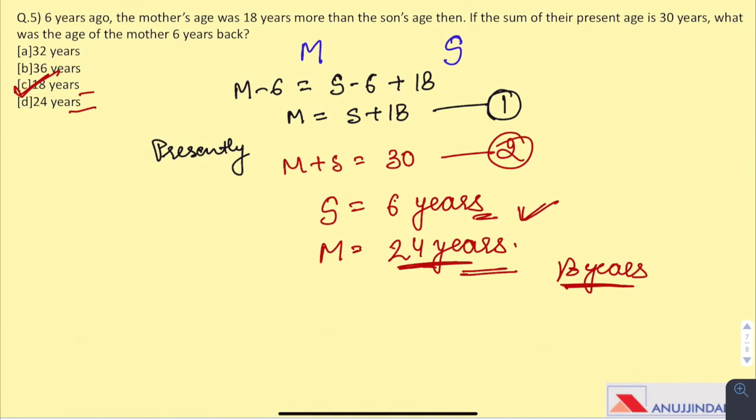And this question can be solved verbally as well. Just by seeing this information, the sum of their present ages is 30 years, you can eliminate options A and B, as the mother's age cannot be 36 years or 32 years, because it is greater than even the sum of their combined two ages. And for the rest of two options, you can put the values and check. While doing such questions, read the question carefully about what age it is asking, whether it is asking about the present age or the age 6 years ago. Hope you found this video beneficial for your preparation. If you have any queries regarding any question, do let me know in the comment section below. Don't forget to like, share, subscribe.